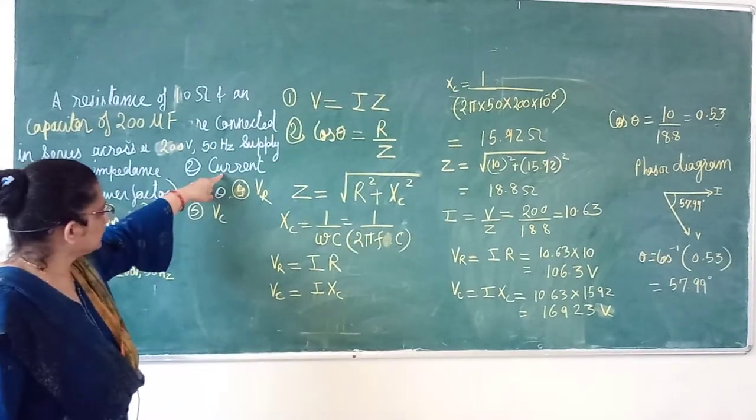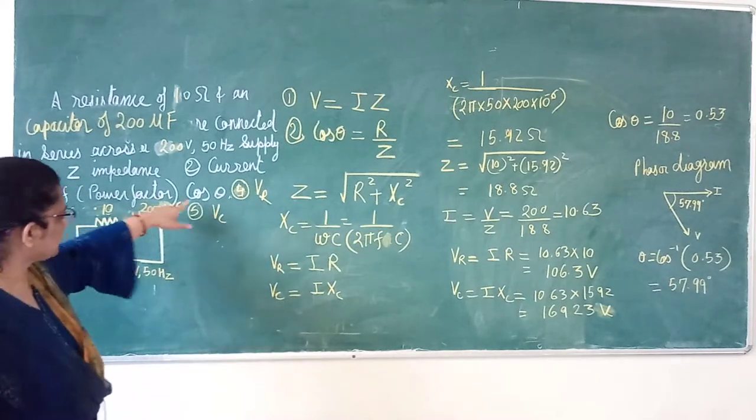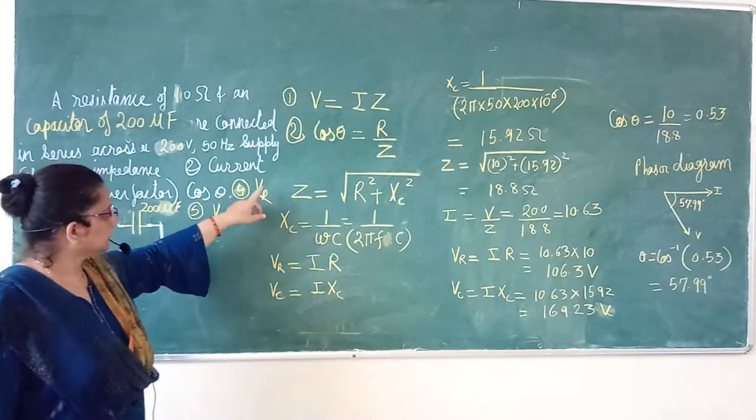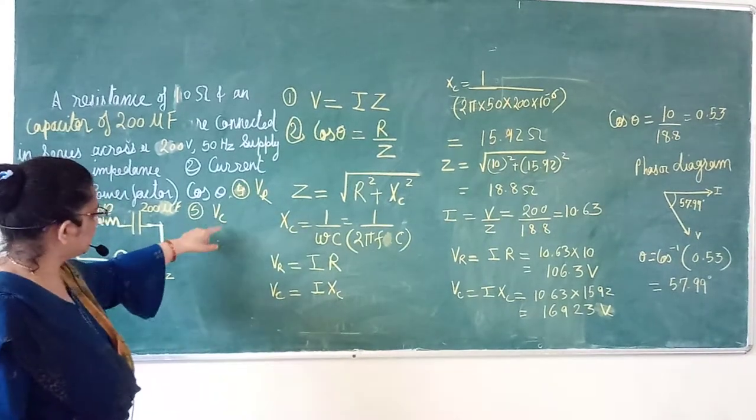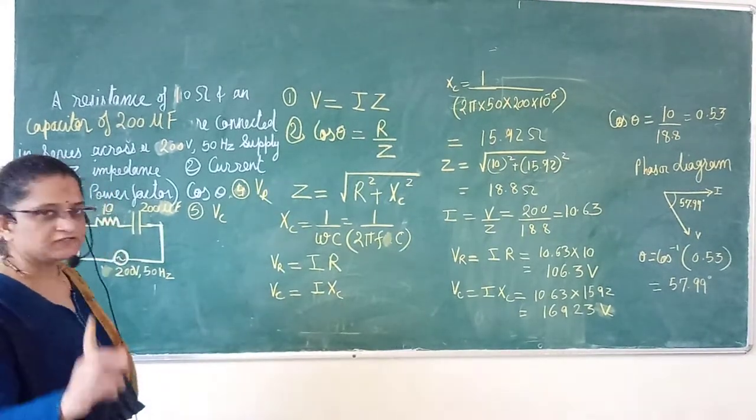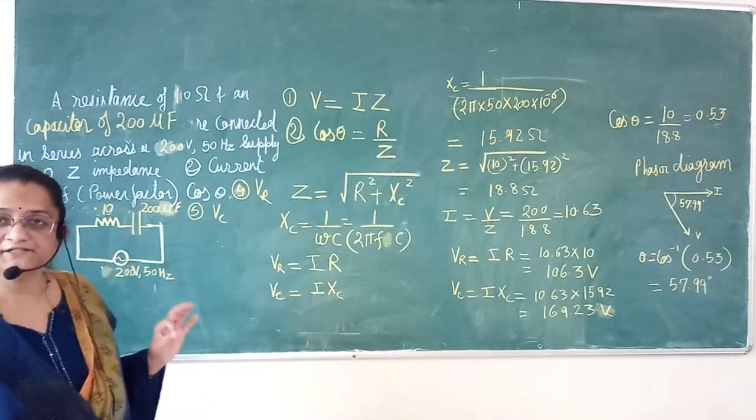Calculate first impedance, second current, third power factor cos theta, voltage across resistor, voltage across capacitor. And as you know, this is the capacitive reactance.